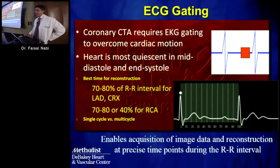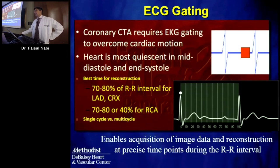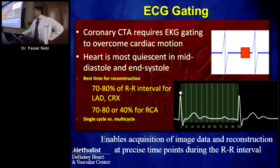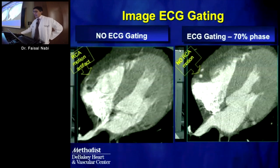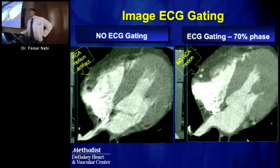The heart is constantly moving, so we correct for this by gating to the EKG. There are certain phases of the cardiac cycle where there is limited cardiac motion—the best known is mid-diastolic phase, and there is also the isovolemic relaxation phase at end-systole. By having an EKG, we can image at these particular time points when the heart is most still. An ungated image shows blurring, whereas gating to the appropriate RR phase produces a pristine coronary artery.